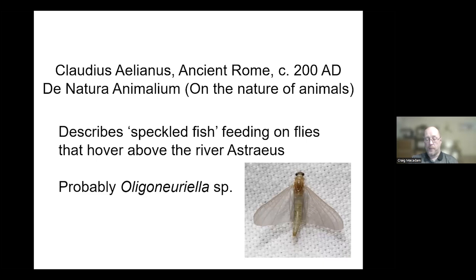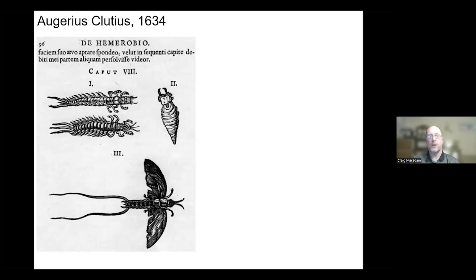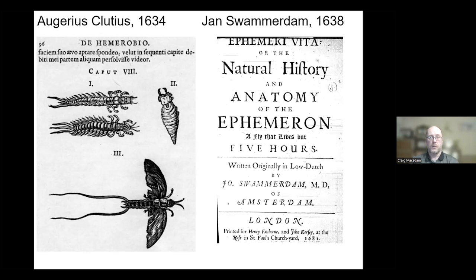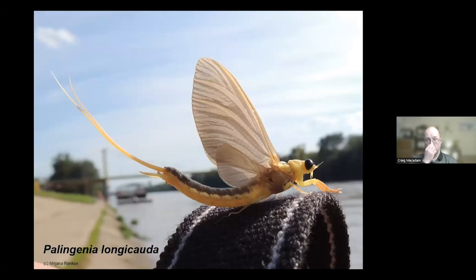Coming forward quite a bit further, Clotius described the life cycle of mayflies in 1634, though he got it a bit wrong. He noted the larval and adult forms but also included a pupal form because he couldn't work out how they got from the water to the air. The most significant description of that period was by Swammerdam, a European worker in the Netherlands, who described the natural history and anatomy of the ephemera — a fly that lives but five hours. That species was Palingenia longicauda.